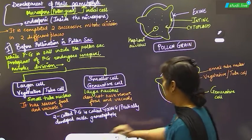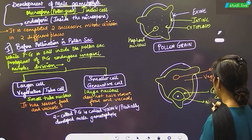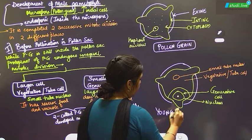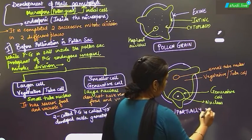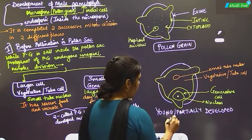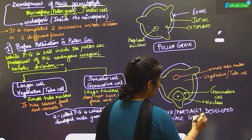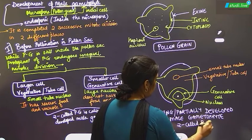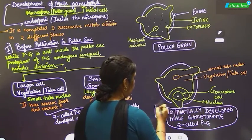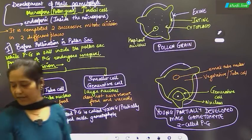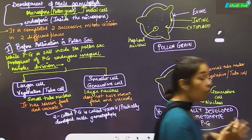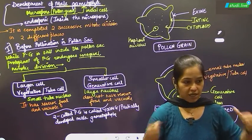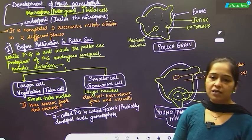We show a large nucleus for the generative cell. This diagram is called the young or partially developed male gametophyte, and it is also called the two-celled pollen grain. From the first mitotic division, the larger cell is the vegetative or tube cell (VT), and the smaller cell is the generative cell.